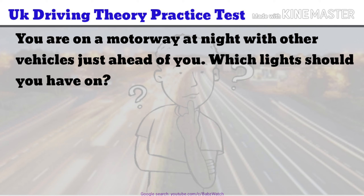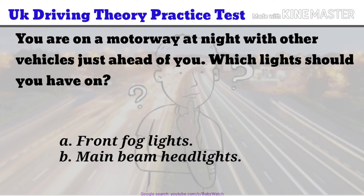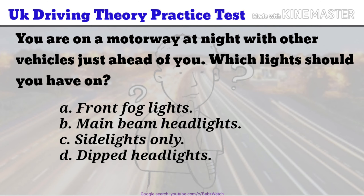UK Driving Theory Practice Test Question 10 of 50. You are on a motorway at night with other vehicles just ahead of you. Which lights should you have on? a. Front fog lights. b. Main beam headlights. c. Side lights only. d. Dipped headlights. The correct answer is d.